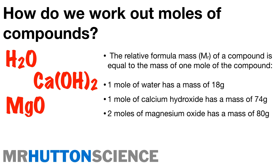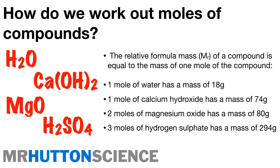For magnesium oxide, looking at two moles: magnesium is 24, oxygen is 16, giving Mr = 40; multiplied by two gives 80 g. The next example is hydrogen sulfate — looking at three moles: hydrogen is 1 × 2, sulfur is 32, oxygen is 16 × 4; the formula mass is 98 g, and three moles gives 294 g.